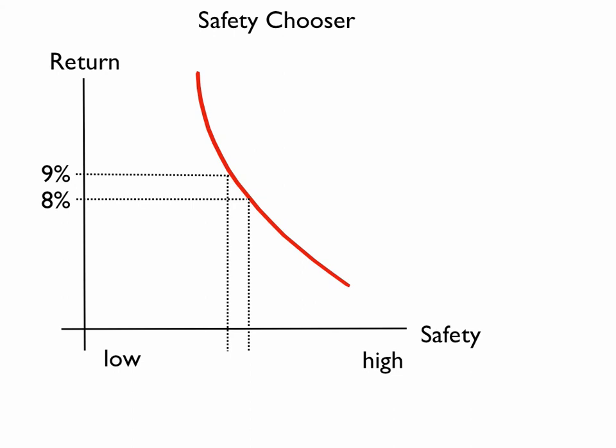Now, in this case, this represents a safety chooser. They're not willing to give up much safety for the same 1% return. So an indifference curve that's more up and down represents a safety chooser.